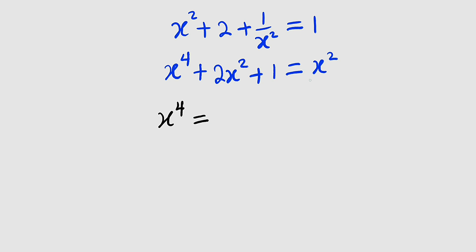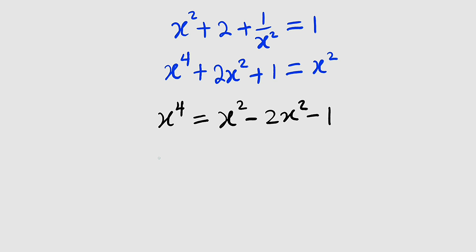So x to the power of 4 stays on the left-hand side. On the right-hand side, we have x to the power of 2 already. As 2x squared crosses over, it becomes negative 2x squared. As positive 1 also crosses over, it becomes negative 1. So x to the power of 4 equals x squared minus 2x squared, which gives us negative x squared, minus 1. This is an important equation that we are going to make use of.